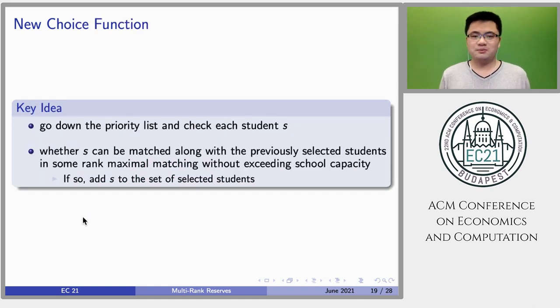Next, let me explain the key idea of our new choice function. It checks each student based on the school priority ordering whether student S can be matched with the previously selected students in some rank-maximal matching without exceeding school capacity. If so, we add the student to the set of selected students. Otherwise, we move on to next student.